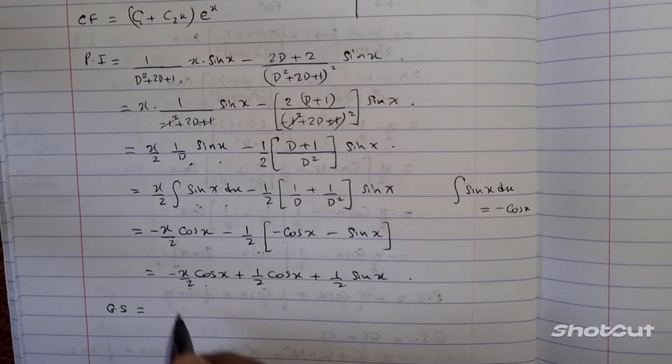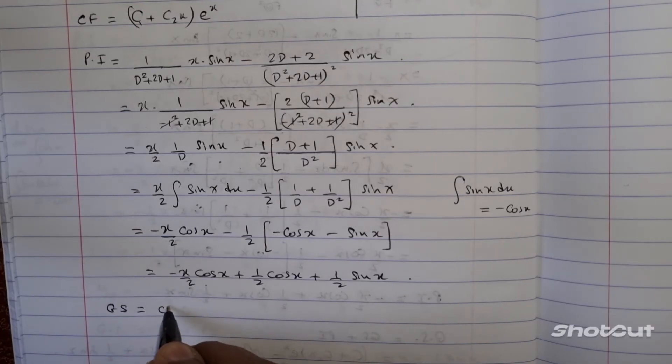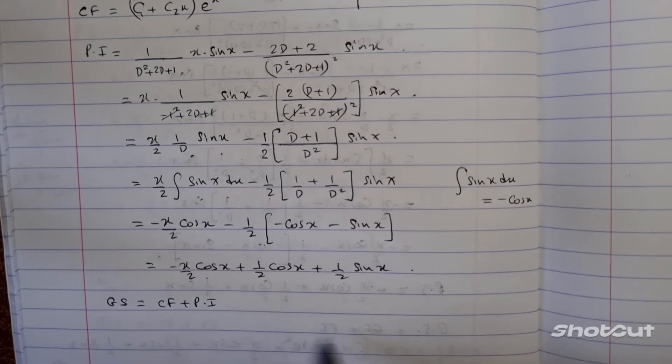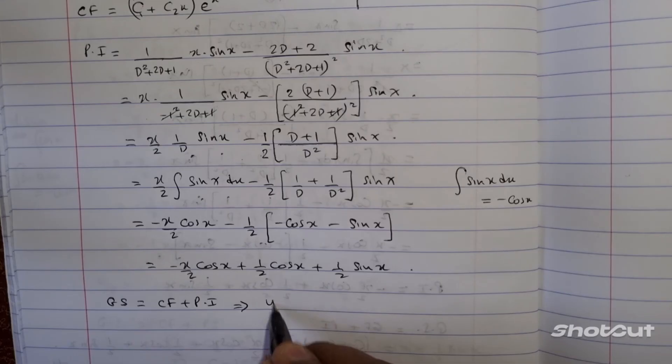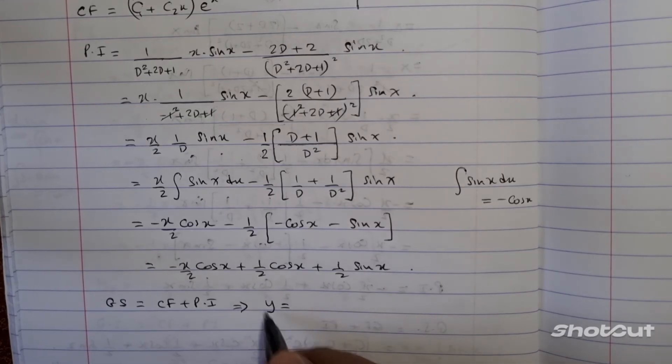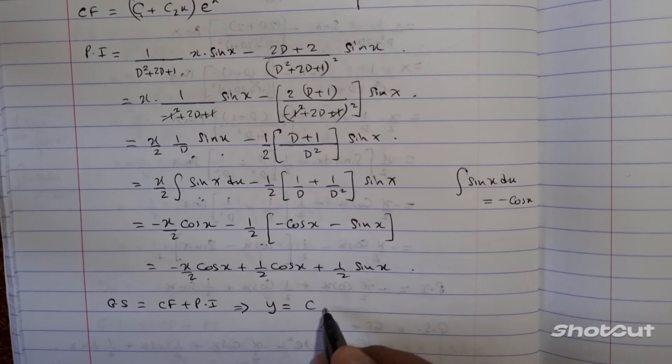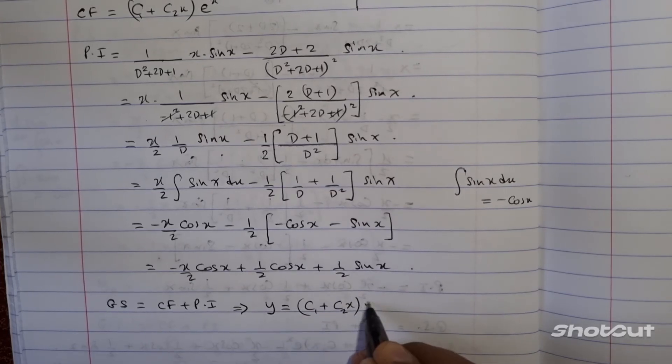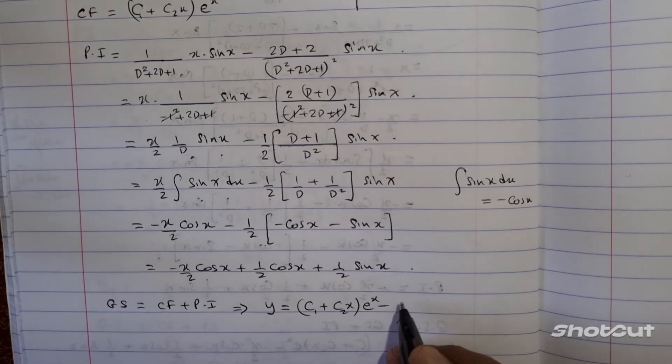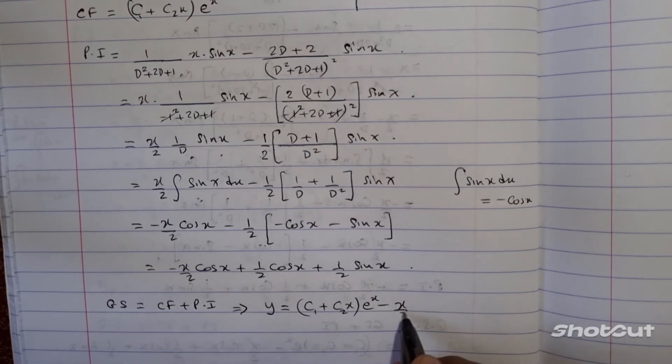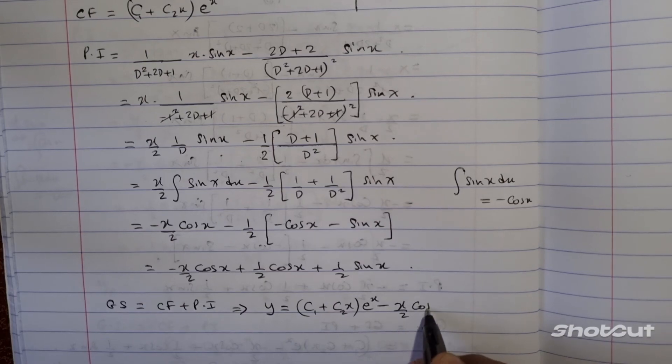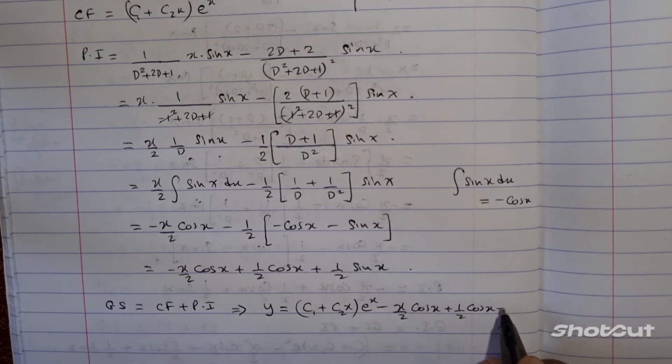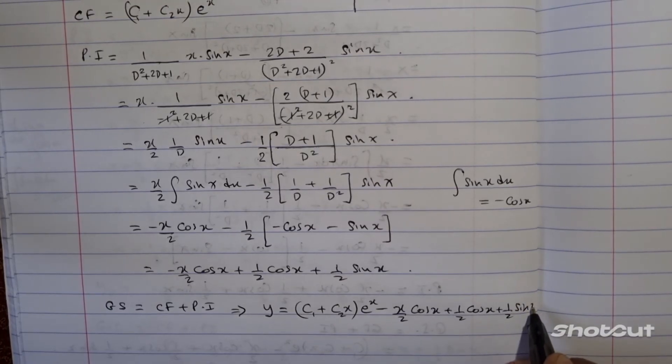So, we know that the general solution is made up of the complementary function plus the particular integral. So, therefore, for this particular equation, I've got y is equal to y as the general solution. The complementary function was c, I mean, c1 plus c2 into x into e to the x plus the particular integral, which is minus x over 2 cos of x plus half cos of x plus half sine of x.